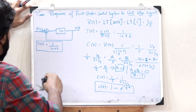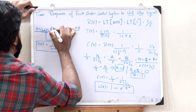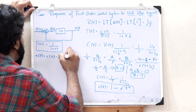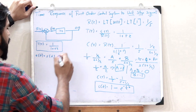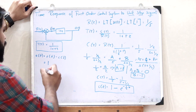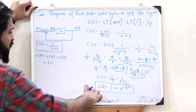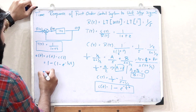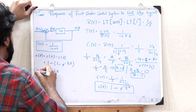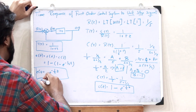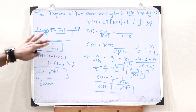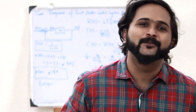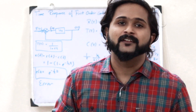We also have a particular error signal here. The error signal is given as e(t) = r(t) − c(t). Here, r(t) = u(t) = 1 (the unit step input), and c(t) = 1 − e^(−t/τ). Therefore, e(t) = 1 − (1 − e^(−t/τ)) = e^(−t/τ). This is the error value when the input is a unit step signal.